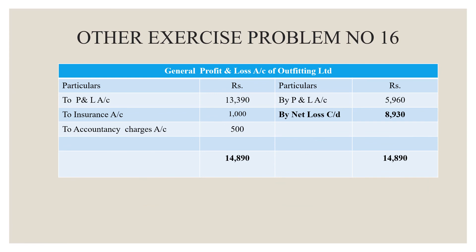This is the general profit and loss account where we combine both departments. We enter Department B's net loss of 13,390 on the debit side and Department A's net profit of 5,960 on the credit side. We get a credit balance of 8,930 as the overall net loss, with a grand total on both sides of 14,890.